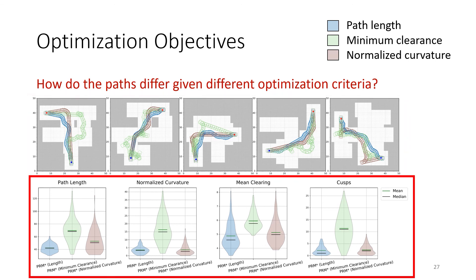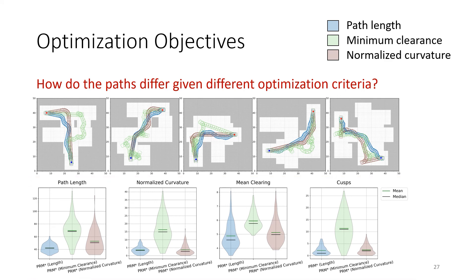In the bottom row, we report the statistical results from PRM-STAR using these three different objectives. The figure indicates that maximizing the minimum clearing distance indeed increases the clearance compared to minimizing the path length or normalized curvature but also increases the number of cusps substantially. Minimizing the normalized curvature, on the other hand, decreases the curvature slightly compared to minimizing the path length.